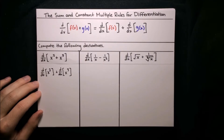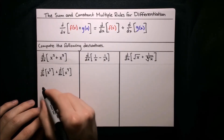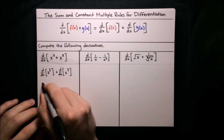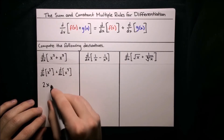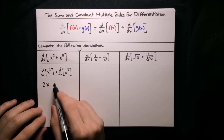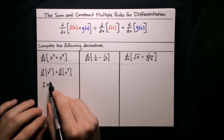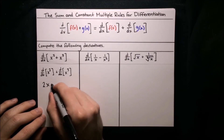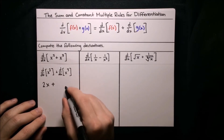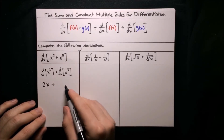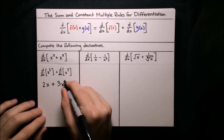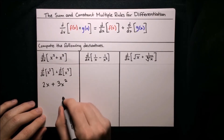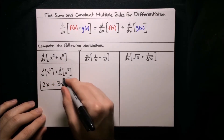Now using the power rule, we know that the derivative of x squared — we bring down the exponent 2, then x, and decrease that exponent by 1, so 2 minus 1 is just 1, it's really just 2x. Same idea for x cubed: apply the power rule to get 3x squared. So there we go, that is the derivative.